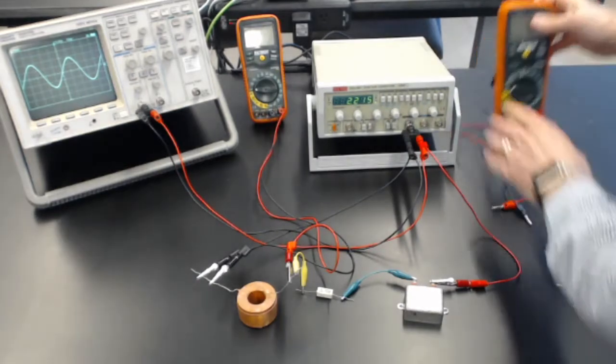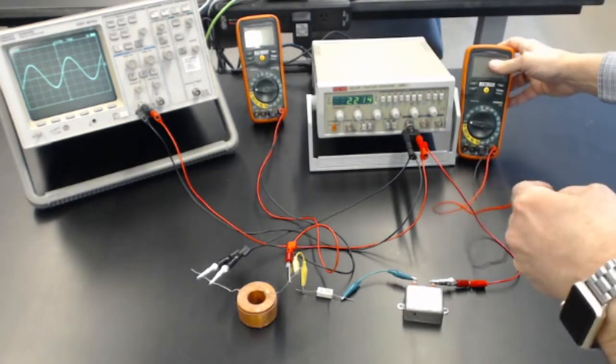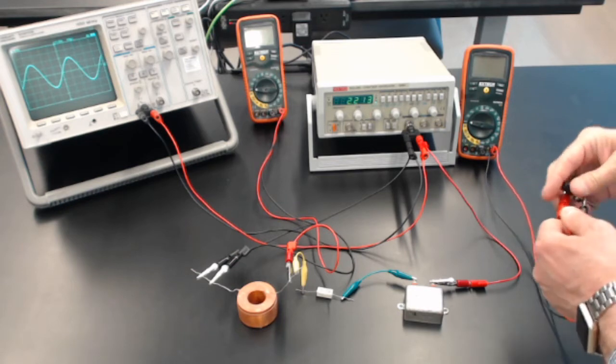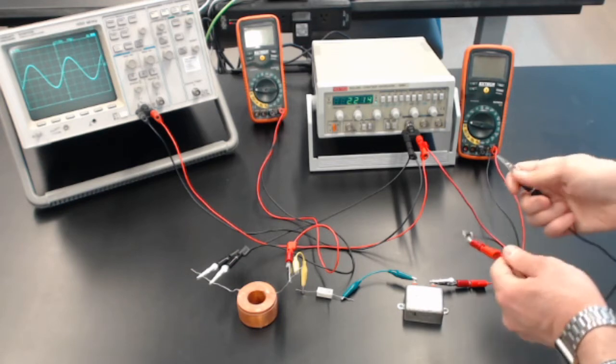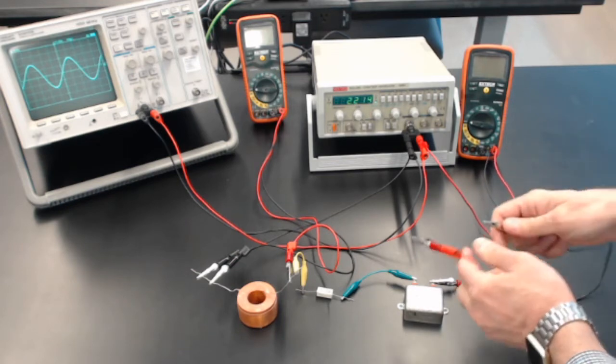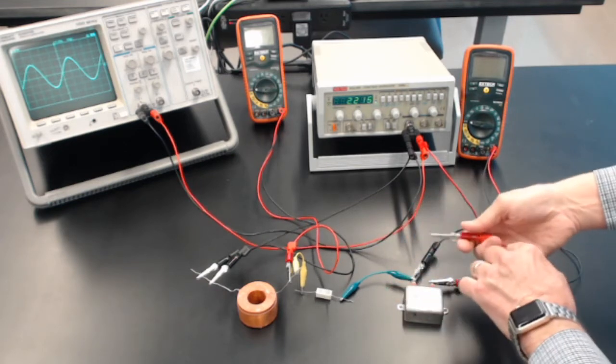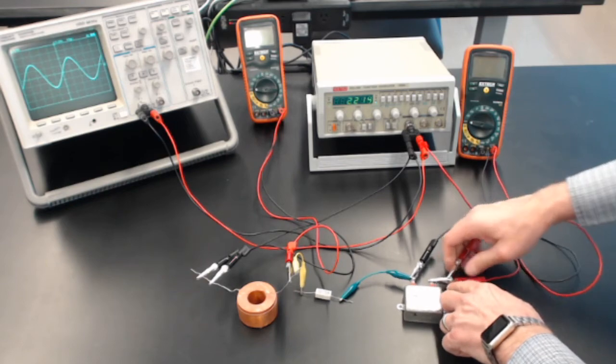And then I'll take the other digital voltmeter and connect. Again, put two alligator clips on just to help connect, and I'll connect this across the two sides of the capacitor.